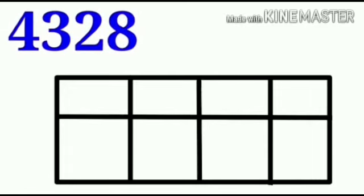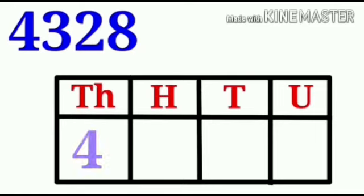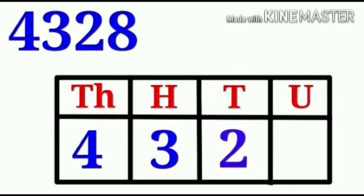Four thousand, three hundred, twenty-eight. Write four under the thousands place. Now we must write the digits in the hundreds, tens, and units place. Three is under the hundreds place. Twenty-eight has two tens and eight units, so we write two under the tens place and eight under the units place.